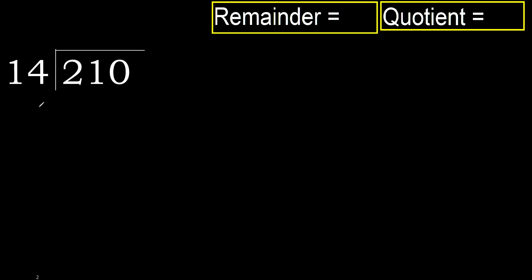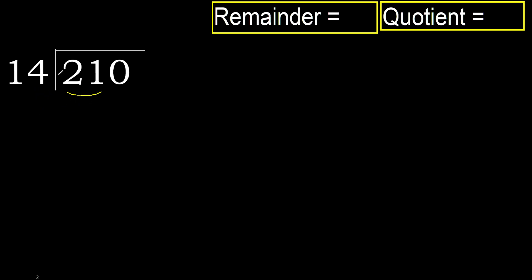210 divided by 14. 2 is less, therefore next. 21 is not less, therefore with 21: 14 multiplied by which number is nearest to 21?